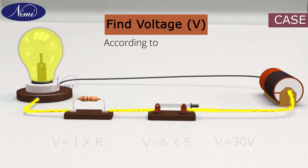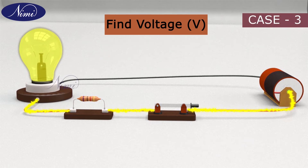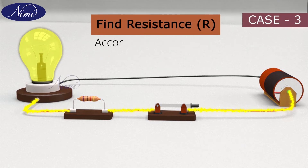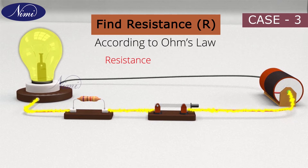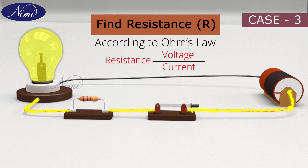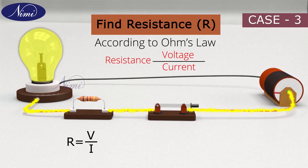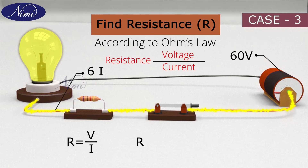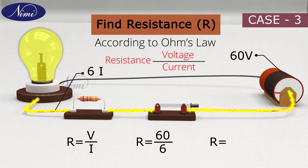In case 3, to find the value of resistance, according to Ohm's law, resistance is voltage by current, that is R is equal to V by I. And by substituting the value of voltage and current in the formula, we obtain resistance R as 10 Ohm.